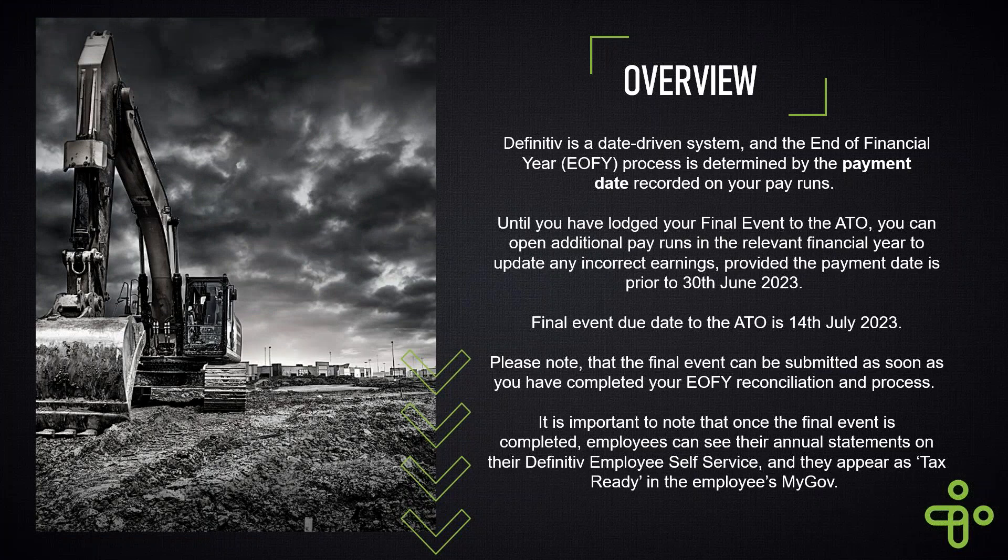You'll need to make sure that until you've lodged your final event, you can make any additional pay runs in the relevant financial year to update any incorrect earnings, provided the payment date is prior to 30 June. The final event is due to be reported to the ATO by the 14th of July 2023 - that's the cutoff for all products.